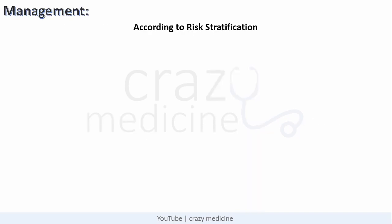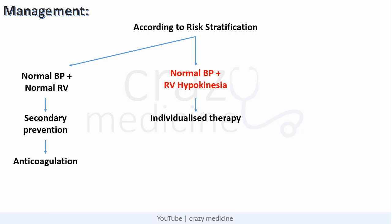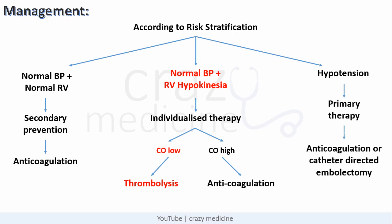Coming to management of pulmonary embolism, done according to risk stratification. First, when the patient has normal blood pressure with a normal right ventricle, secondary prevention with anticoagulation is done. Second, when blood pressure is normal but the patient has right ventricular hypokinesia, individualized therapy is done — thrombolysis when the patient has low cardiac output, and anticoagulation when cardiac output is high. Last, when the patient has hypotension, primary therapy with anticoagulation or catheter-directed embolectomy is preferred.